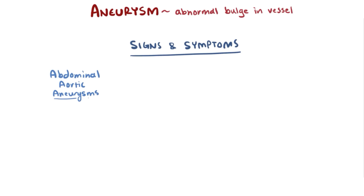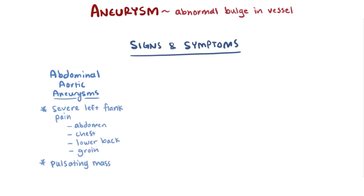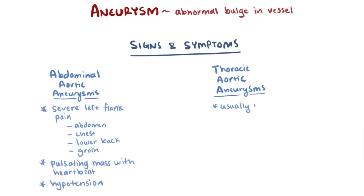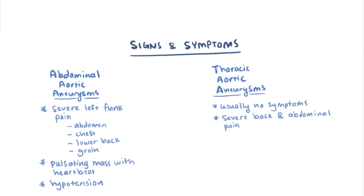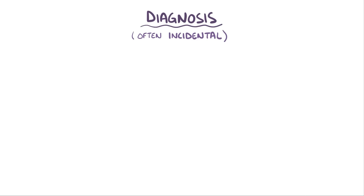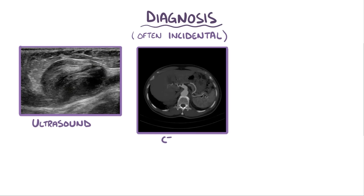Abdominal aortic aneurysms sometimes have signs and symptoms, and sometimes they don't, even if the aneurysm has ruptured. Severe pain in the left flank — including the abdomen, chest, lower back, and groin — a pulsating mass in time with the heartbeat, and hypotension occur in about 50% of ruptured aneurysms and are considered the classic signs of abdominal aortic aneurysm. Thoracic aorta aneurysms usually don't have any symptoms, although sometimes they can cause severe chest, back, and abdominal pain. Aneurysms can be asymptomatic and are sometimes diagnosed accidentally when an individual gets an imaging study for another reason, usually seen best on an ultrasound, CT scan, or MRI.